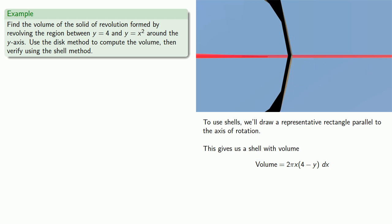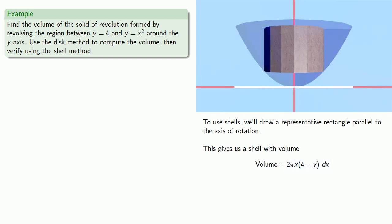So that gives us the volume of the shell, circumference times height times thickness, and we'll sum these from y equals 0 to y equals 4, and that allows us to express our volume as a definite integral.